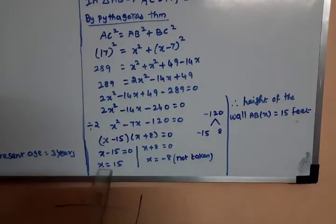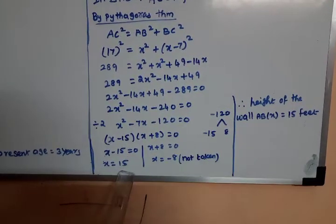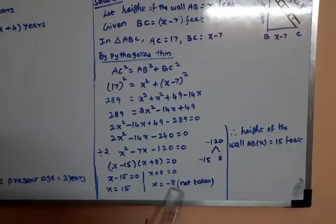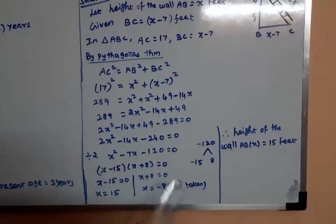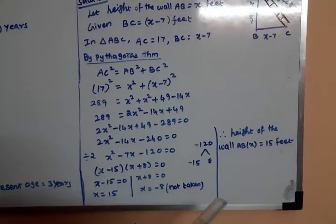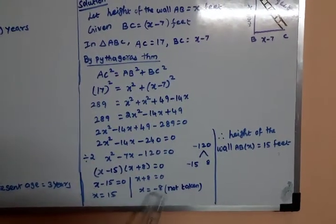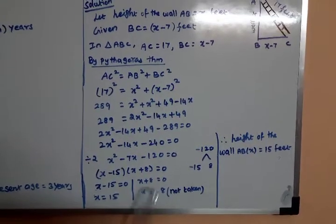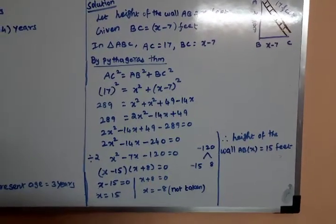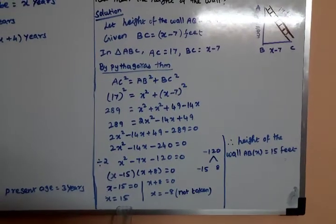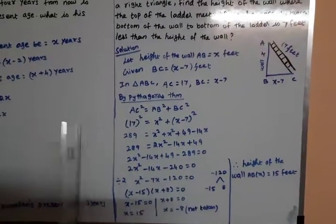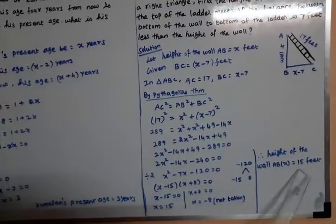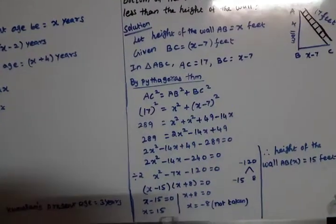So X minus 15 equals 0 gives X equals 15, and X plus 8 equals 0 gives X equals minus 8. Since X represents a height, the negative value X equals minus 8 is rejected. Therefore, X equals 15, and the height of the wall is 15 feet.